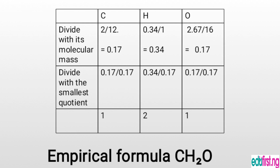Dividing all by 0.17, we get: carbon = 1, hydrogen = 2, and oxygen = 1. In cases where we don't get whole numbers, you round up the figures. For example, if your answer is 2.5, you round up to 3 because the digit after the 2 is 5 — any digit of 5 or more, you add one. If you have 2.3, you round down to 2. So we've now found the empirical formula: CH₂O.